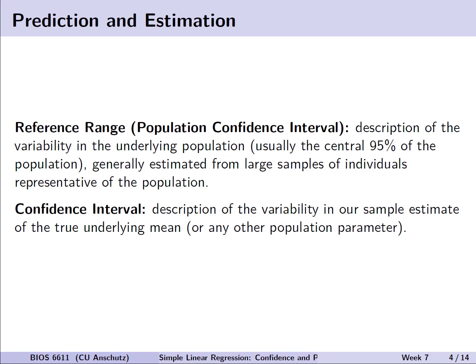So prediction and estimation. We can think of this in two broad ways, one being the confidence interval we've previously talked about and another being what we might call a reference range or a population level confidence interval. The reference range will be a description of the variability in the underlying population, usually the central 95%, generally estimated from large samples of individuals representative of the population. On the other hand, most often we work with confidence intervals - a description of the variability in our sample estimate of the true underlying mean or maybe some other population parameter such as a proportion, an odds ratio, or something else that we're trying to summarize.